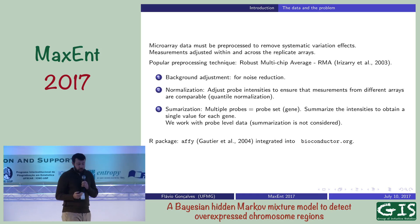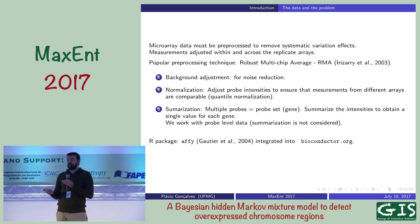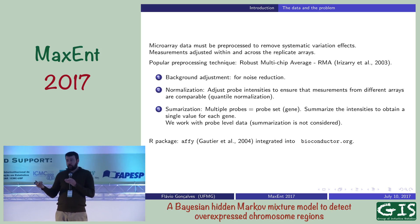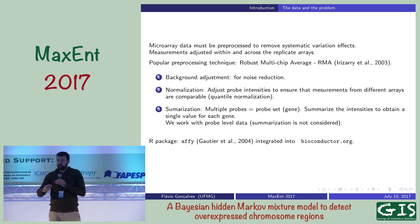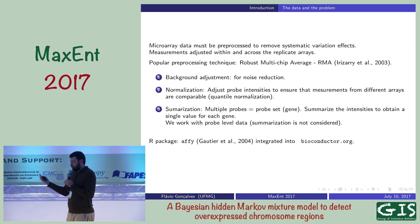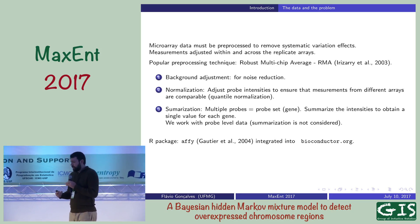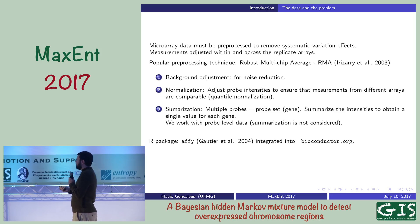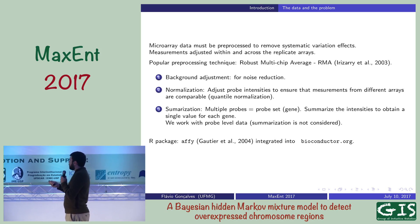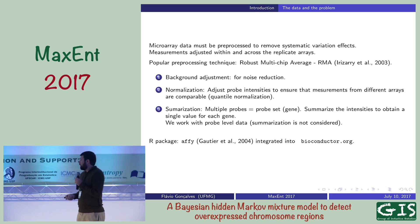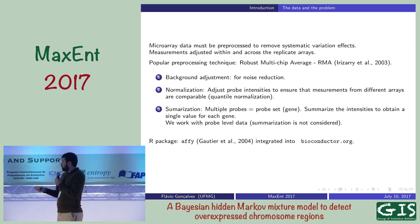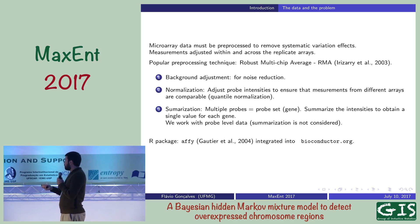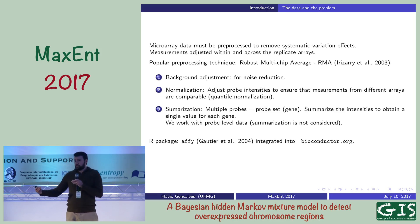Because there is noise from different sources when you perform this experiment, one thing they do is replicate the experiment — putting the cell in more than one microarray. For the data we have, there were from 59 to 250 replications per data set. Noise comes from scanner variation and reading variation of the light intensity. A popular pre-processing technique is this Robust Multi-Chip Average, available as an R package. We do just the first two steps — background adjustment and normalization — because we want to work with probe-level data and do not summarize them.